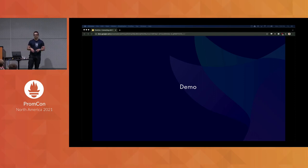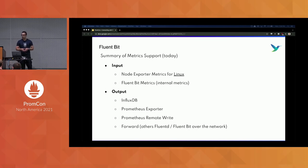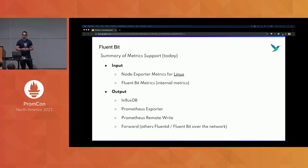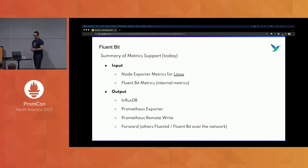Sadly, I'll have to skip the demo because of a Linux environment issue today, but hopefully we'll post something online so you can see how it works. As a summary of our metrics journey, what is supported today in FluentBit: node exporter metrics for Linux, FluentBit internal metrics now supported using CMetrics, and on the output side we can send metrics to InfluxDB, Prometheus exporter, Prometheus remote write, and Forward — which is the FluentBit protocol to send data over the network, allowing a remote FluentBit instance to receive and reassemble metrics context.